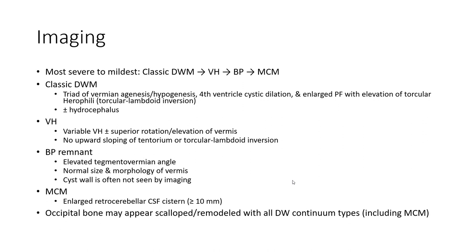Vermian hypoplasia (VH): superior rotation and elevation of the vermis. VH shows no upward sloping torcular or torcular-lambdoid inversion. VH has elevated tegmental vermian angle, normal size and morphology. The cyst wall is often not seen by imaging.